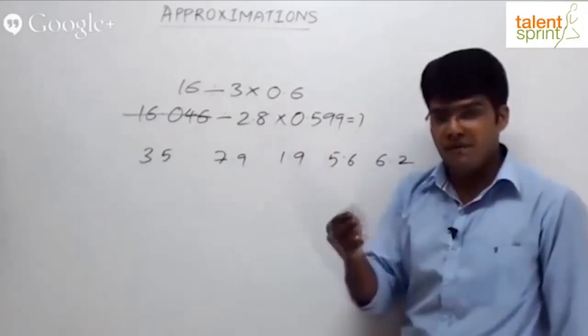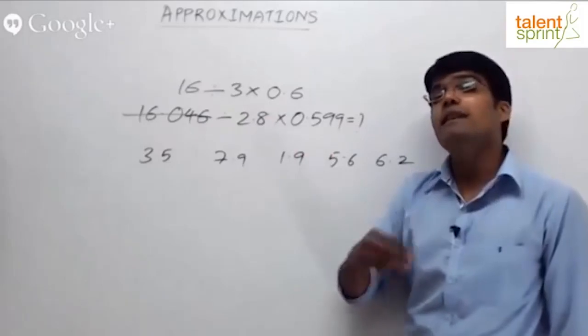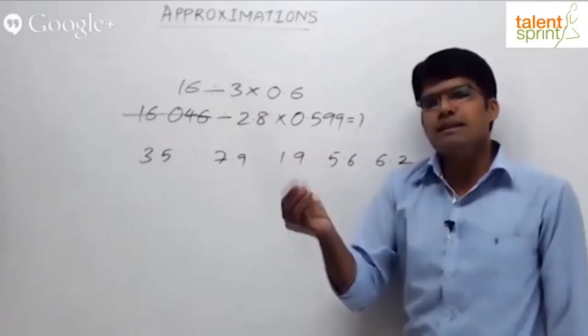5 into 0.6, how much? 3. 5 into 0.6 is 3. 5.33 into 0.6 will be more than 3, slightly more than 3. Look at the options - first option, 3.5, has to be the answer.